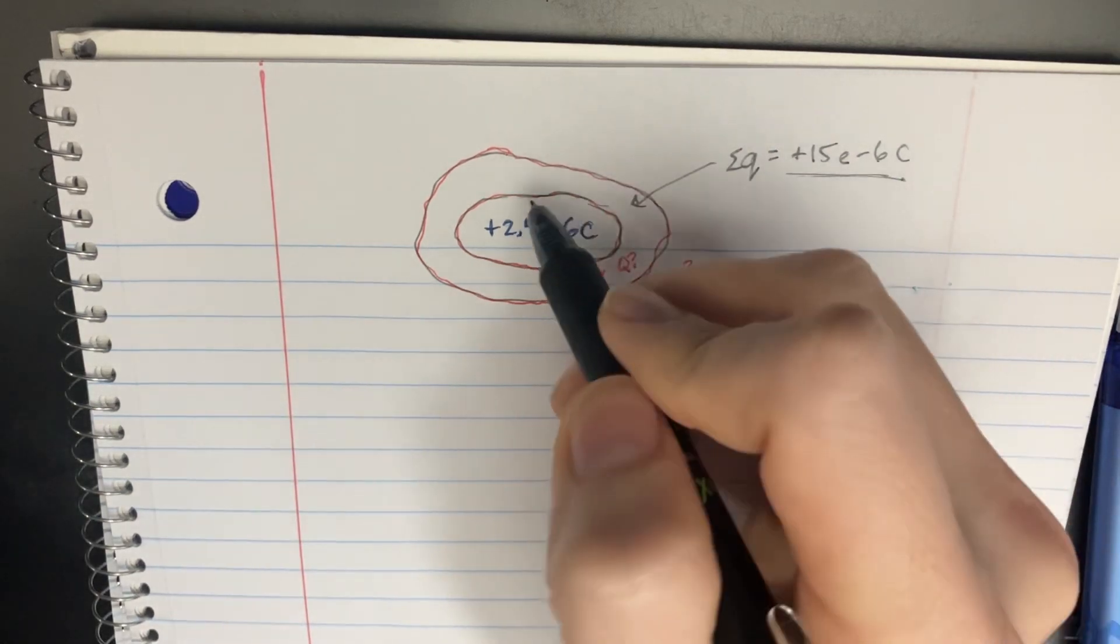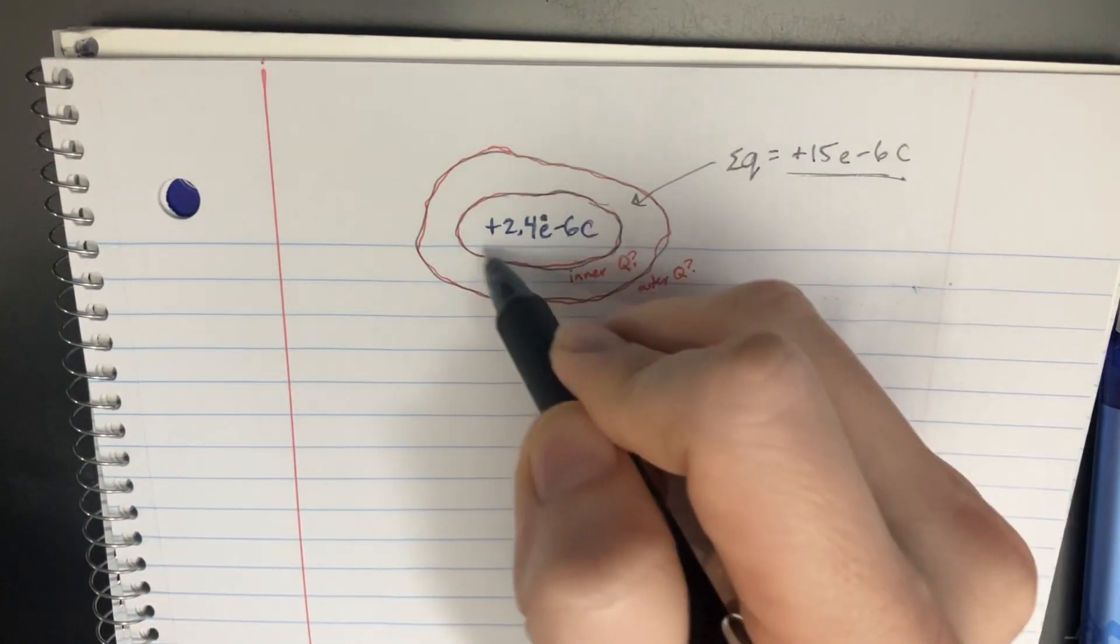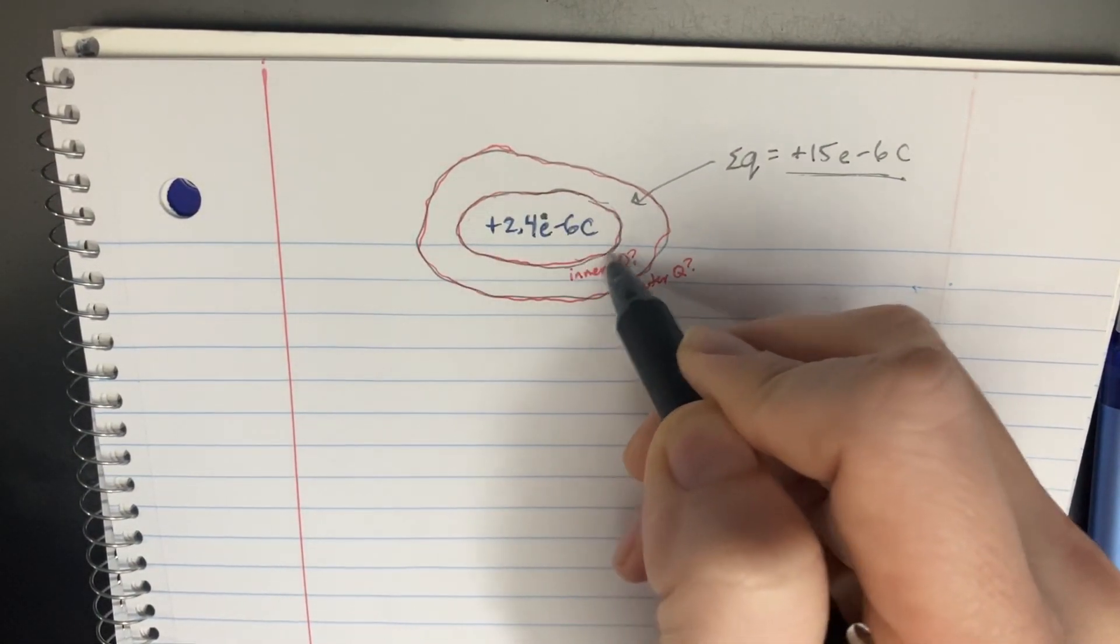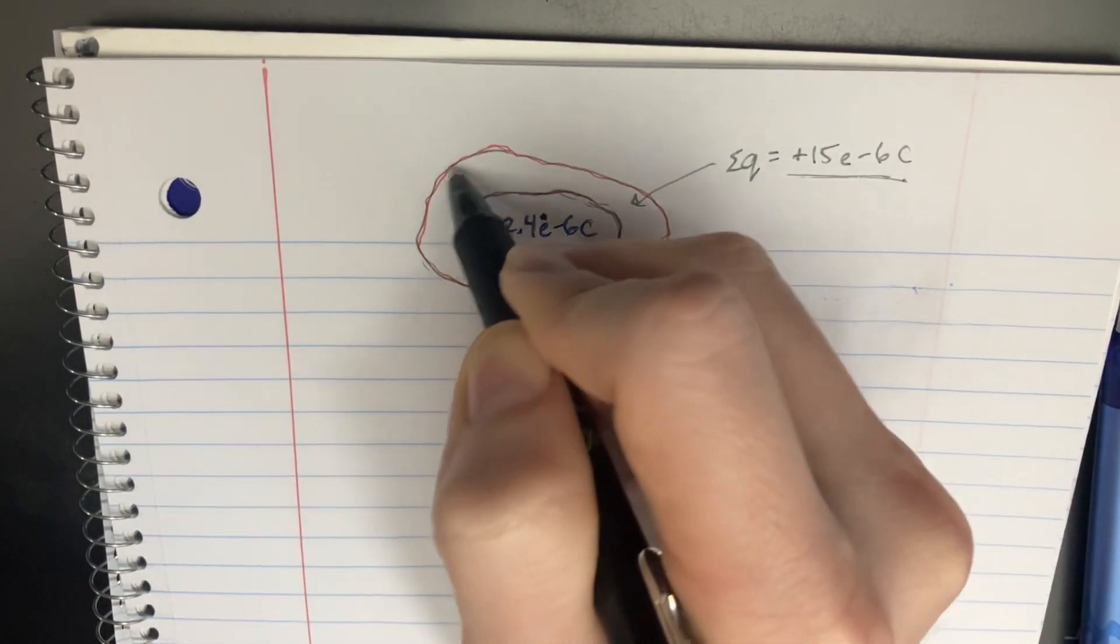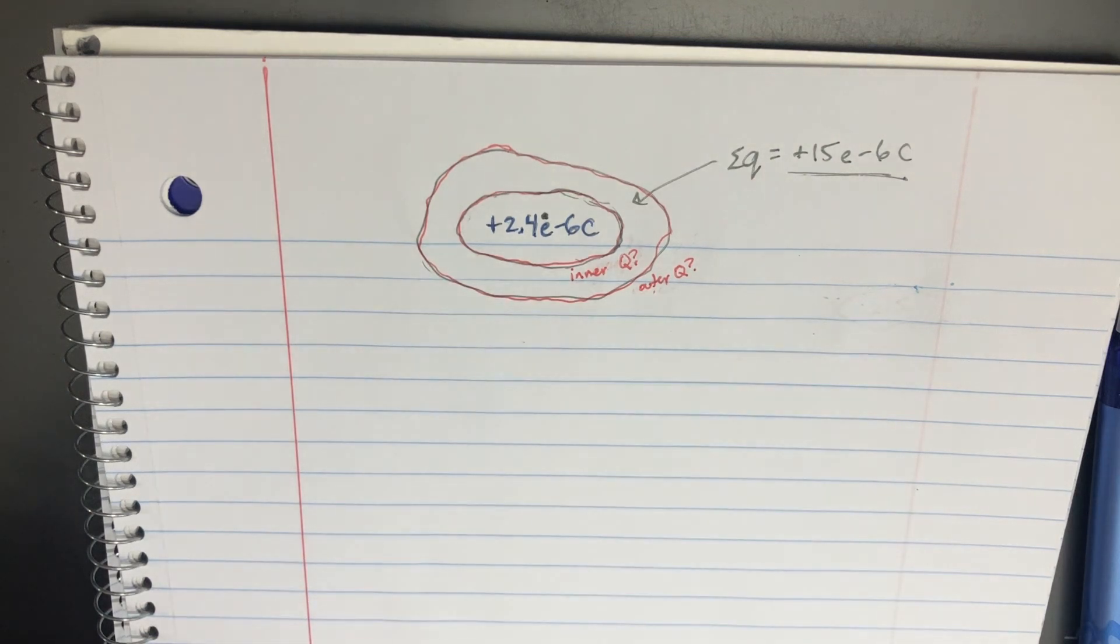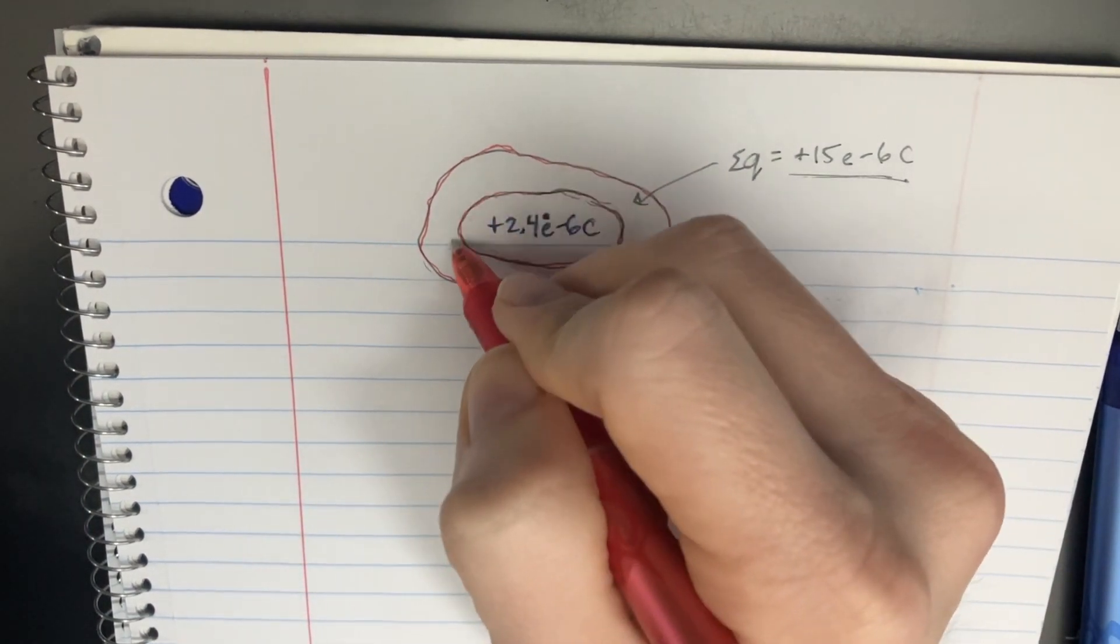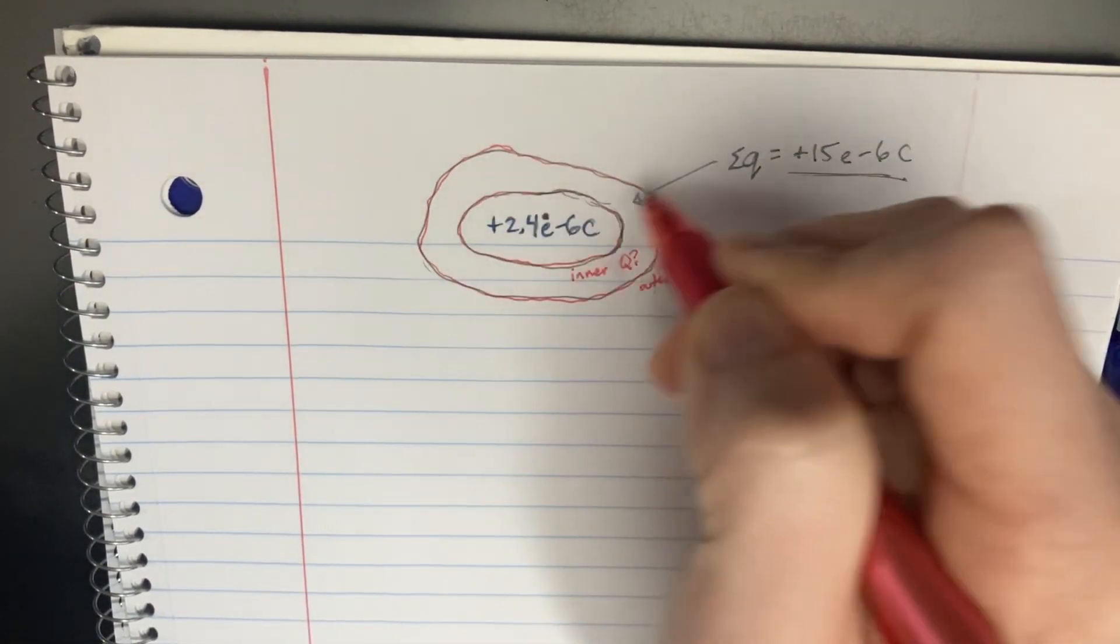And we're asked to figure out what the charge is on this cavity wall, the inner cavity wall, and the outer shell. Because we know that in conductors, the charges go to the edges. They go hang out at the edges.